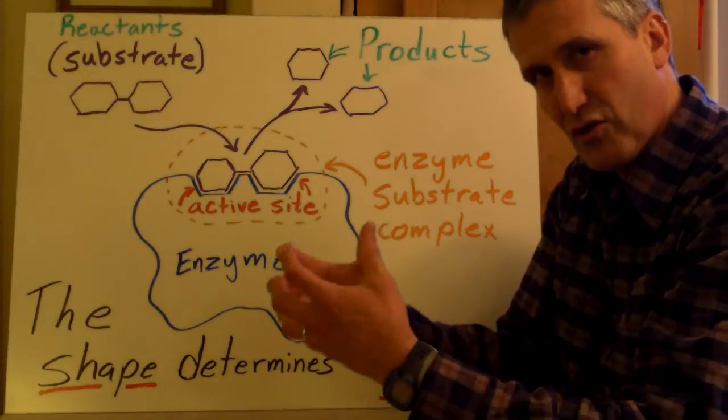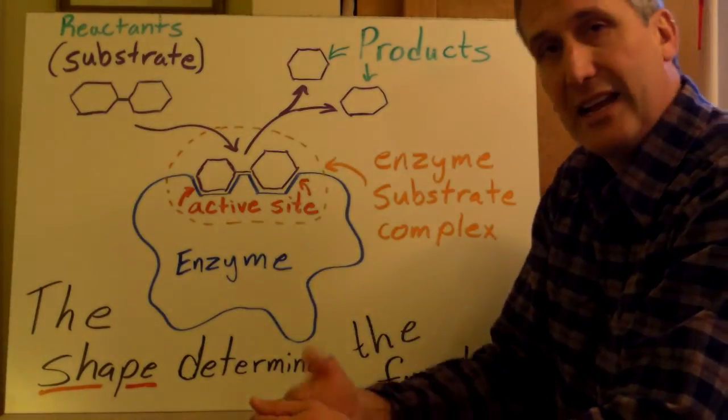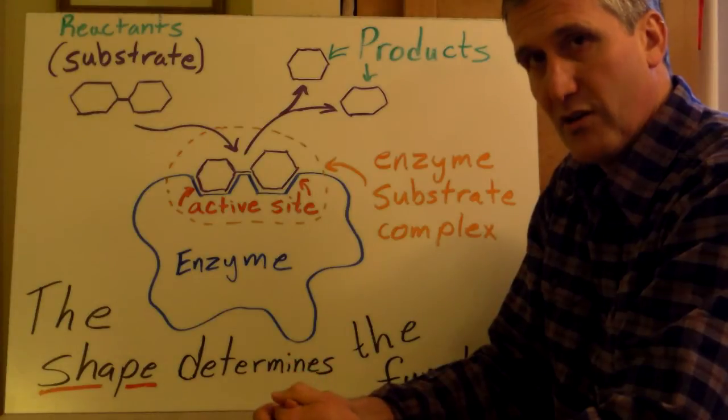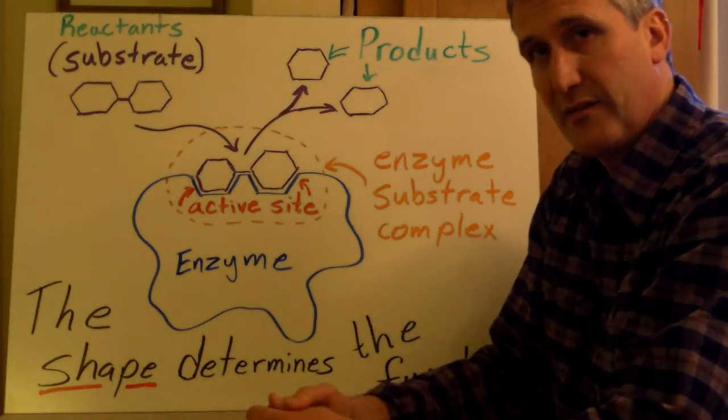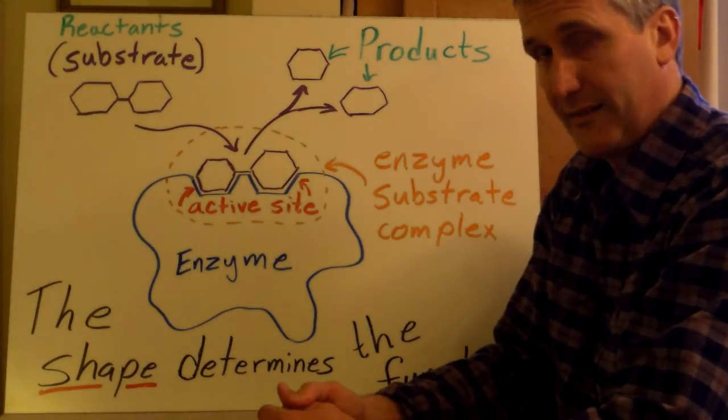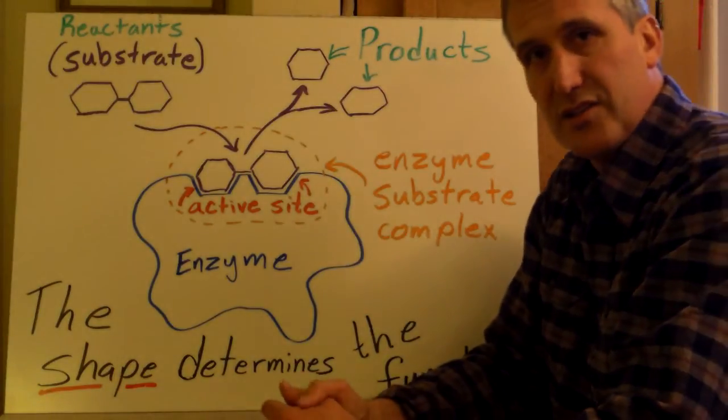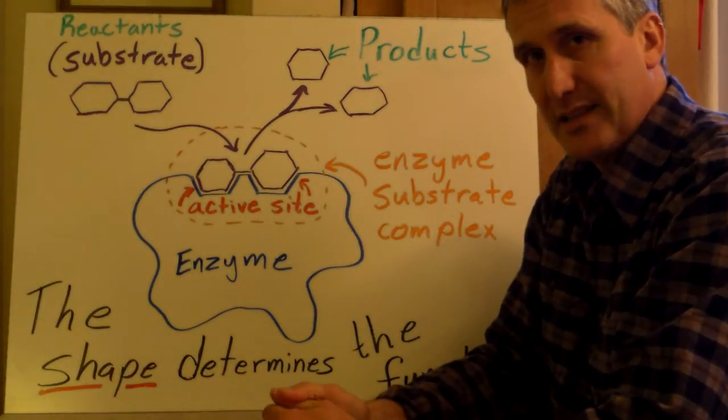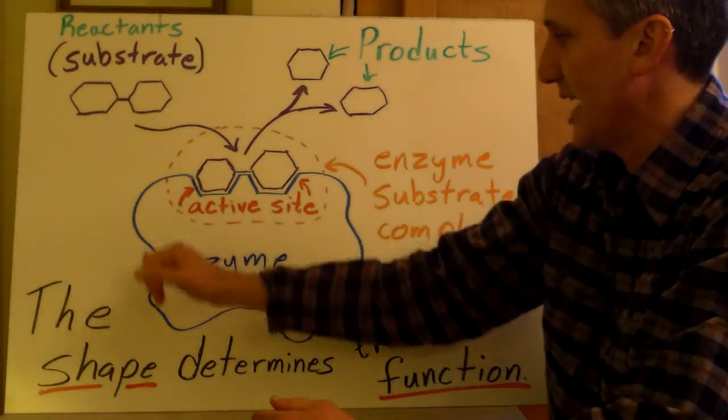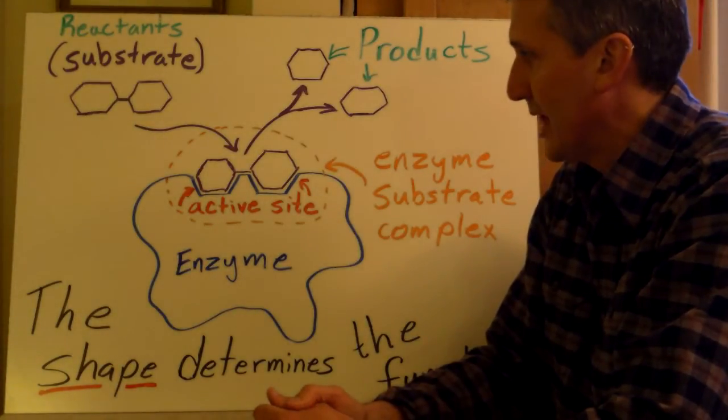When this happens, the enzyme puts some pressure or tweaks the bonds in the substrate and causes the reaction to occur. It actually does it by lowering the activation energy so that the reaction can occur more spontaneously, more quickly. So the reaction occurs and then the products are released by the enzyme.